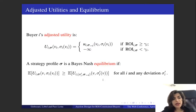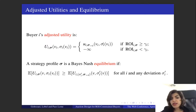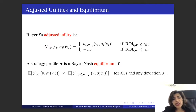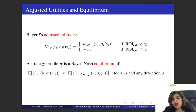Since we have defined the buyer's ROI, we can define the buyer's adjusted utility, which equals the buyer's unadjusted quasi-linear utility if the buyer's ROI is greater than or equal to their target ROI Gamma_i. If the ROI is less than Gamma_i, the adjusted utility is negative infinity, implying the buyer would not participate. We say a strategy profile sigma is a Bayesian Nash equilibrium if no buyer wants to deviate, given that all other buyers follow strategy sigma_{-i}. This is consistent with the traditional definition of Bayesian Nash equilibrium in the mechanism design literature.